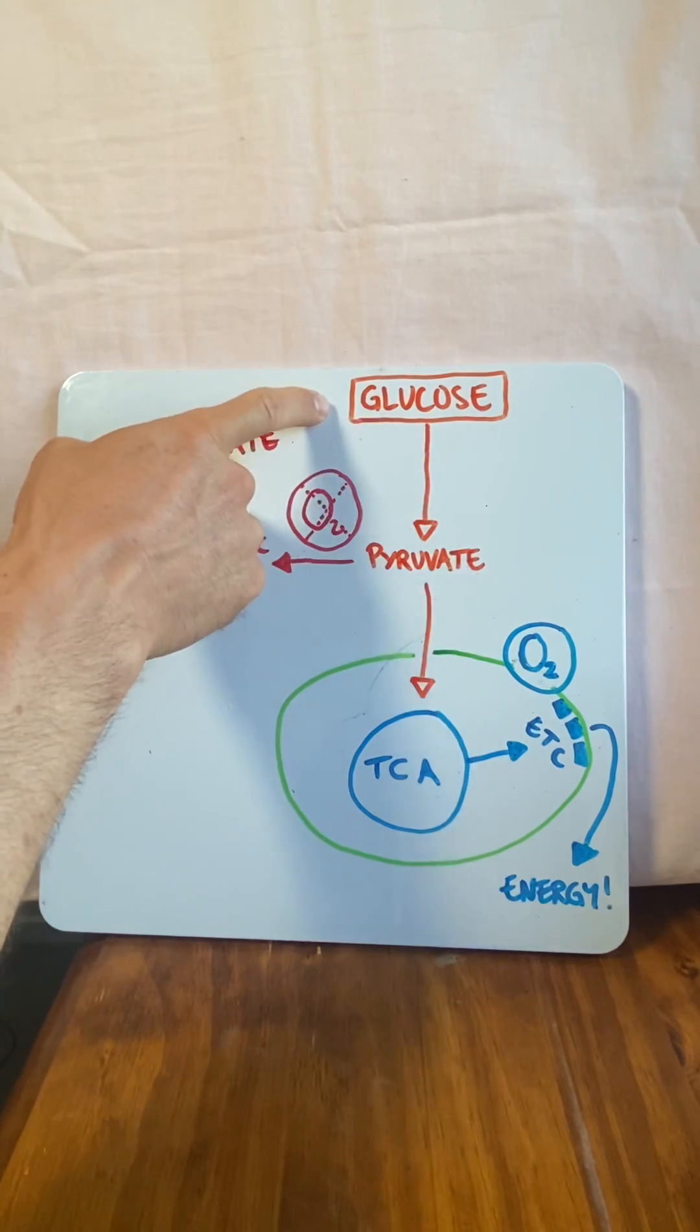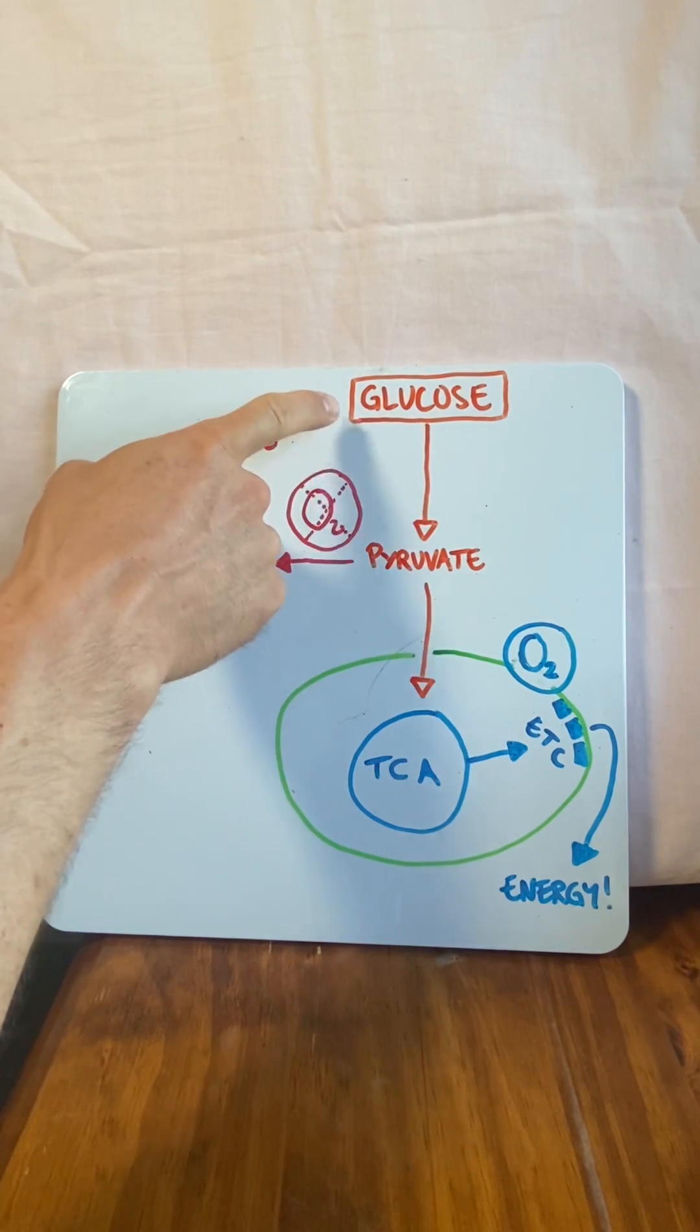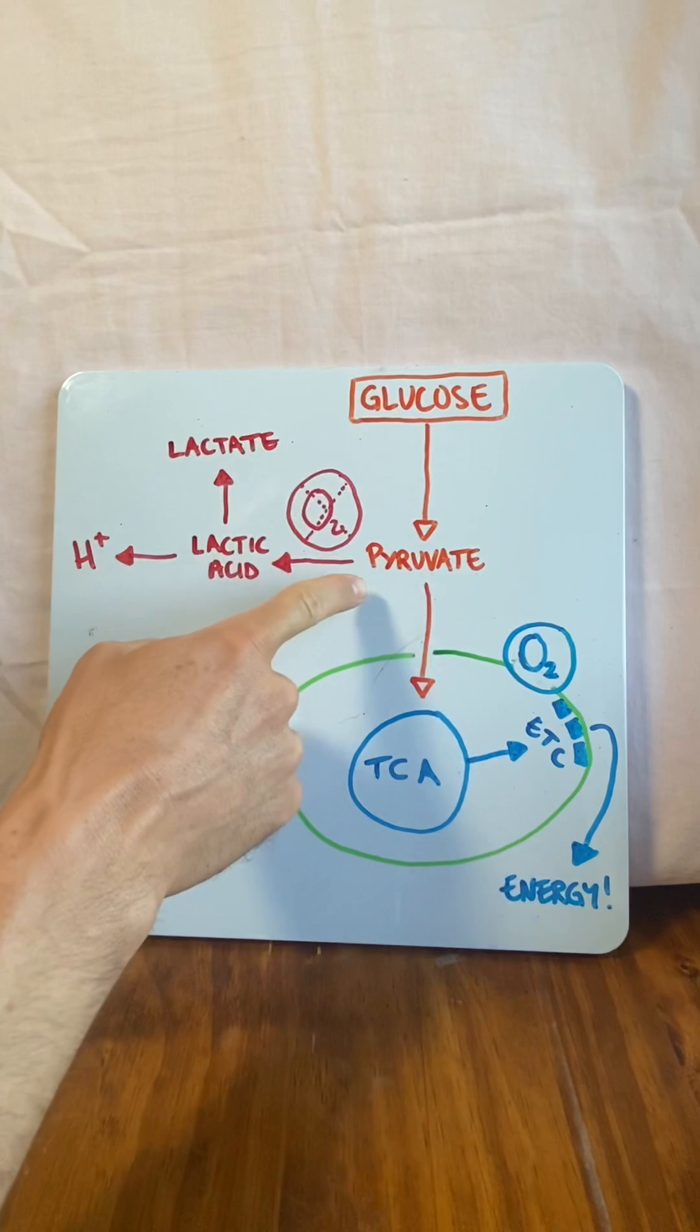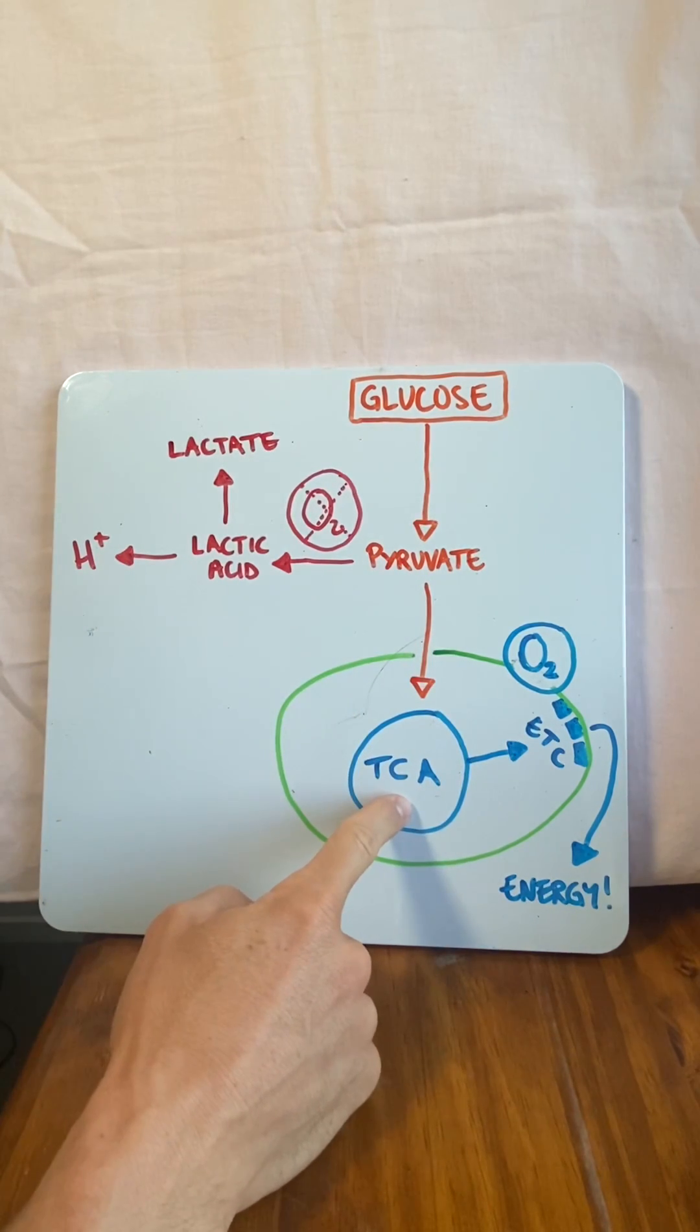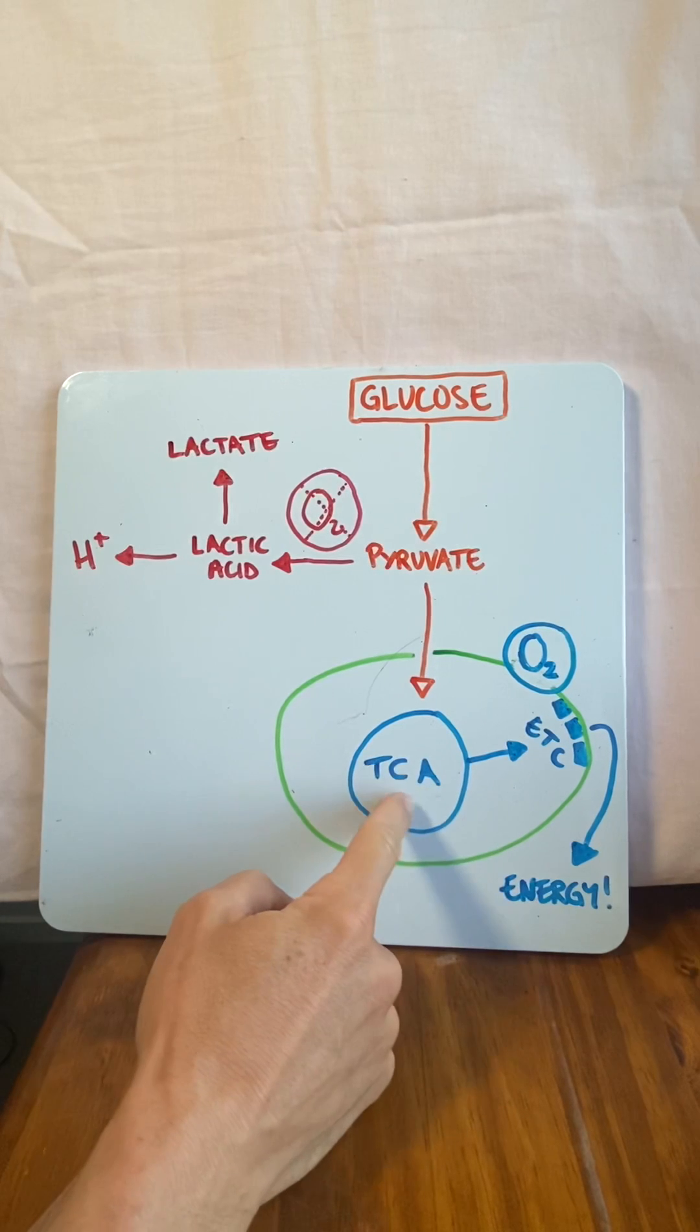First thing is, you know that we can use glucose to produce energy, right? Glucose turns into pyruvate - that's called glycolysis. Pyruvate jumps into the mitochondria, enters the Krebs cycle, also known as the tricarboxylic acid cycle.